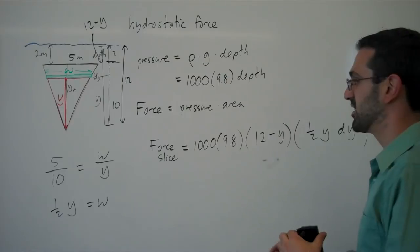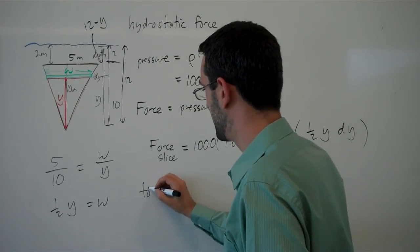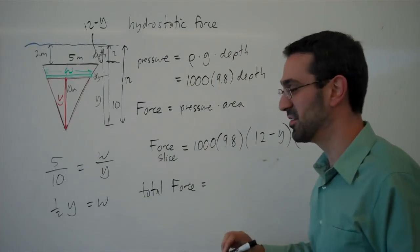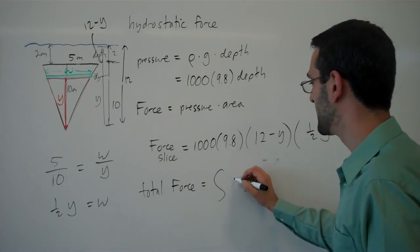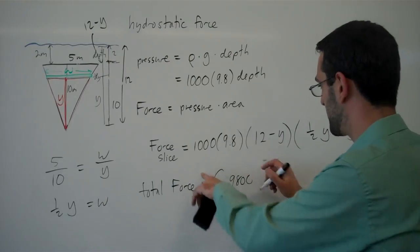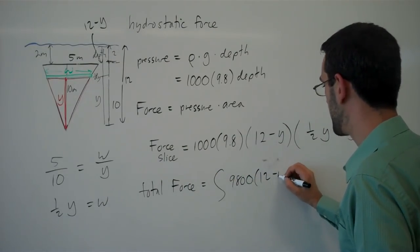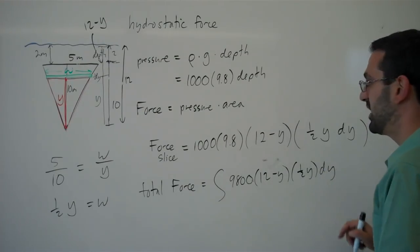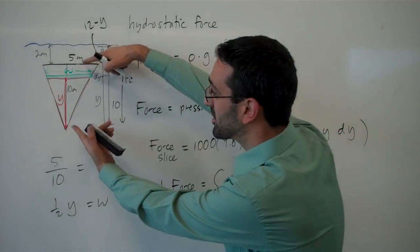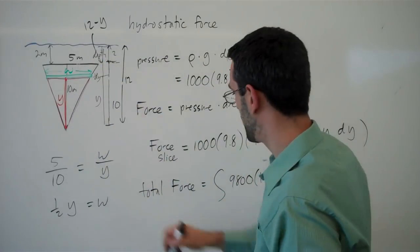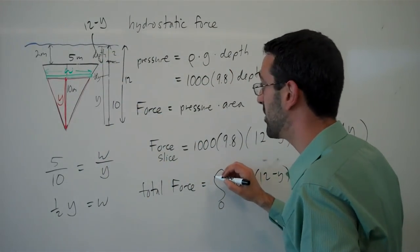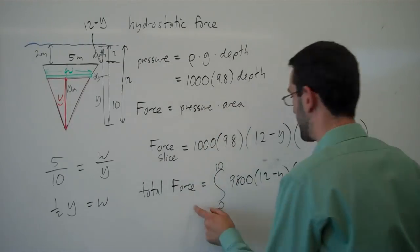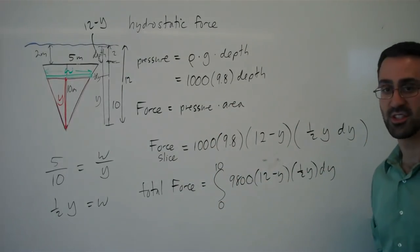Now, to find the total force, we're going to integrate that. We're going to integrate 9,800 times 12 minus y times one-half y dy, and we're going to add that up for all the slices on the triangle. That's y values starting at 0 and ending at 10. This integral will give us the hydrostatic force on that triangular face.